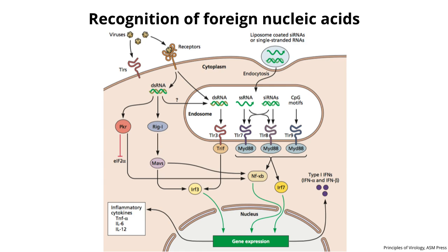The bottom line is that we have detectors in our cells—toll-like receptors, RIG-I, and others—which recognize molecular patterns in viral proteins and nucleic acids and identify them as foreign. Even single-stranded RNAs can be recognized in the cytoplasm; for example, if they have a 5' phosphate, they're recognized as foreign because no molecule in the cytoplasm of an uninfected cell has just a 5' phosphate.